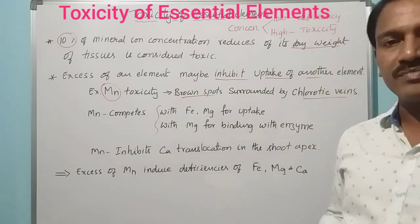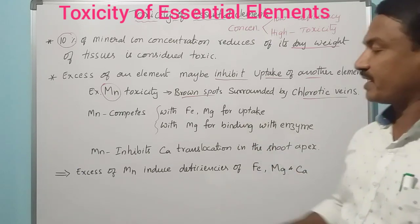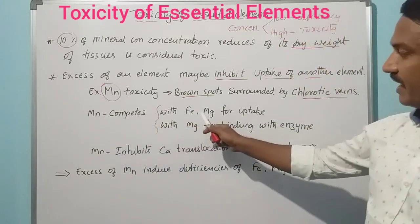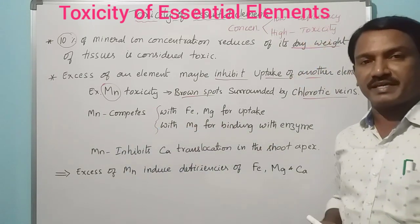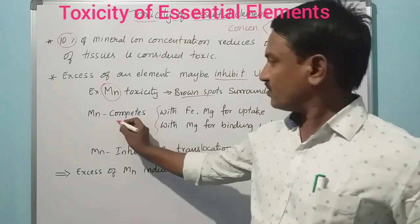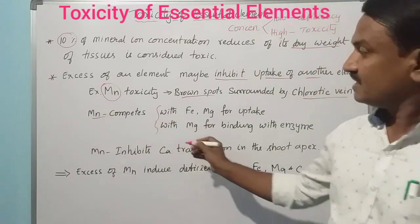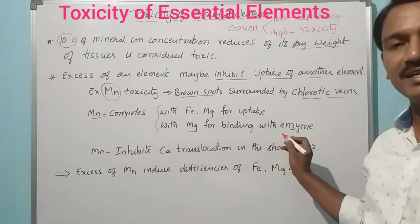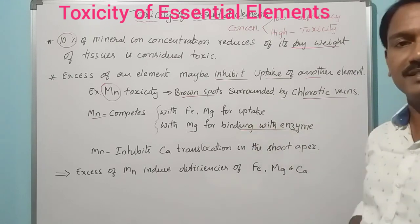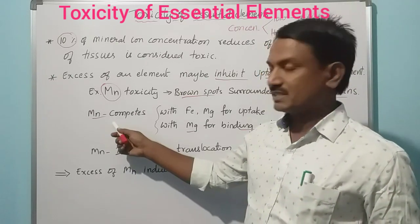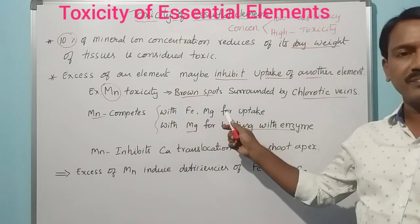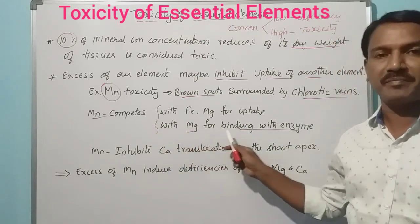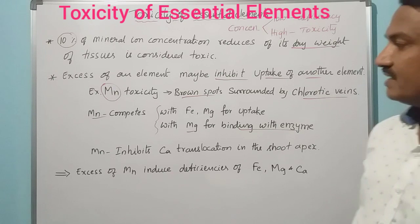When excess manganese is present in plants, it competes with iron and magnesium for uptake. Additionally, excess manganese also competes with magnesium for binding with enzymes. So excess manganese interferes with both the uptake and enzymatic functions of iron and magnesium.